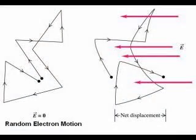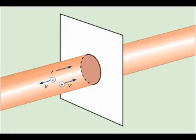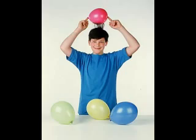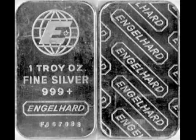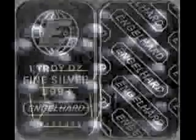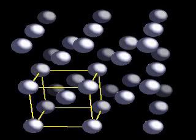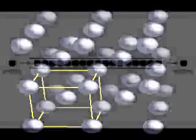The normal motion of free electrons in a conductor is random, with no particular direction or speed. Electrons can be influenced to move in a coordinated fashion through a conductive material. This uniform motion of electrons is what we call electricity, or electric current. To be more precise, it could be called dynamic electricity, in contrast to static electricity, which is an unmoving accumulation of electric charge. Just like water flowing through the emptiness of a pipe, electrons are able to move within the empty space within and between the atoms of a conductor. The conductor may appear to be solid to our eyes, but any material composed of atoms is actually mostly empty space. The liquid flow analogy is so fitting that the motion of electrons through a conductor is often referred to as a flow.